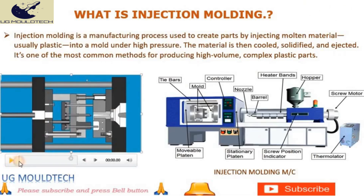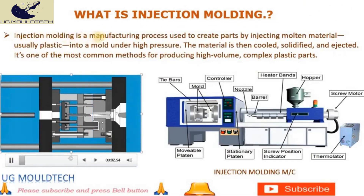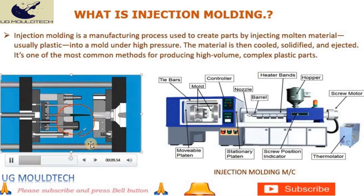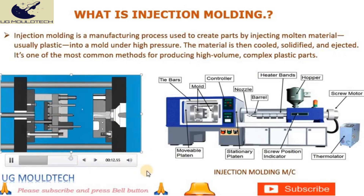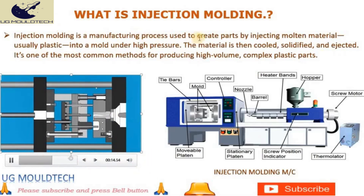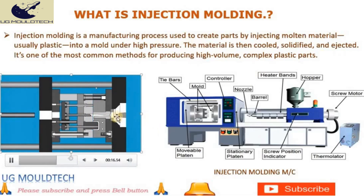Question 1: What is injection molding? First up, a classic. Injection molding is a manufacturing process used to create parts by injecting molten material, usually plastic, into a mold under high pressure. The material is then cooled, solidified, and ejected. It's one of the most common methods for producing high volume, complex plastic parts.